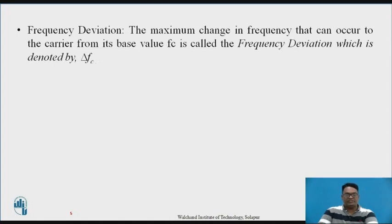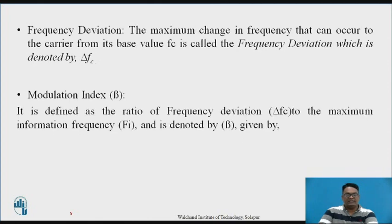Now we are going to see the concept of frequency deviation. It is defined as the maximum change in frequency that can occur in a carrier from its base value fc, and it is denoted by Δfc. The modulation index is defined as the ratio of frequency deviation to the maximum frequency of the main information signal. It is denoted by β and given by β = Δf / fi, where Δf is the frequency deviation and fi is the maximum frequency of the information signal.